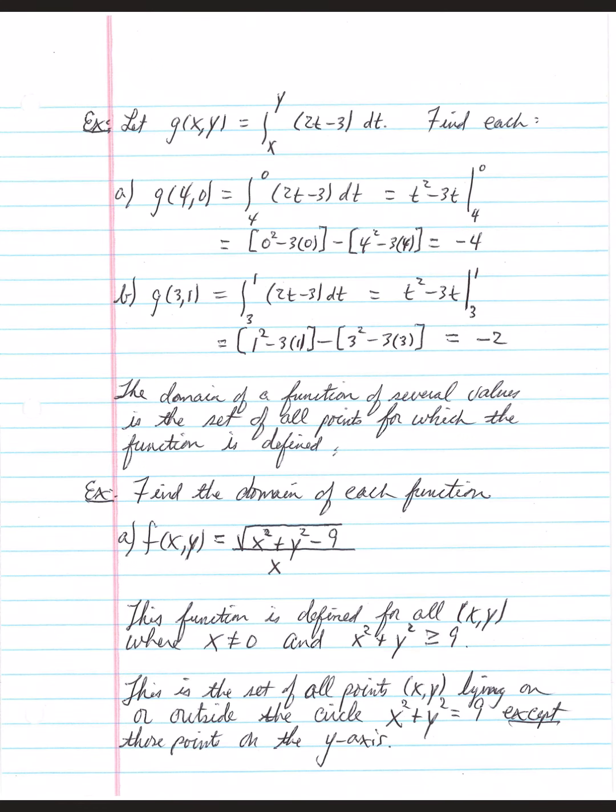The domain of a function of several variables is the set of all points for which the function is defined. For example, this first one, we're going to find the domain of f of x, y, where it's defined as the square root of x squared plus y squared minus 9, all over x. Well, immediately this catches our eye because we don't want a 0 denominator, so x isn't 0.